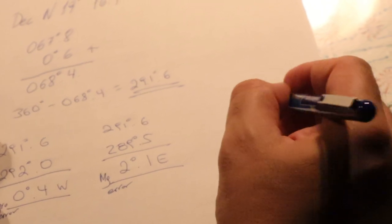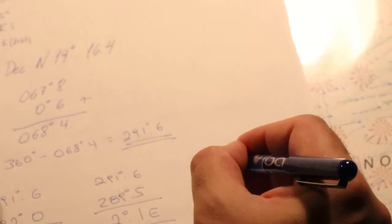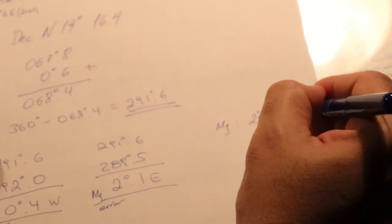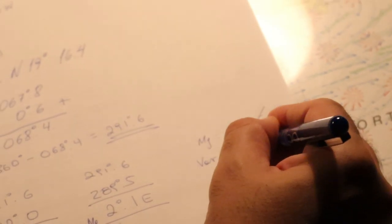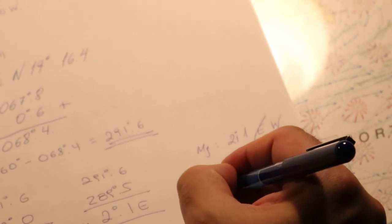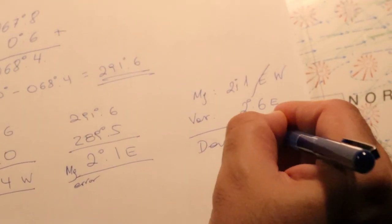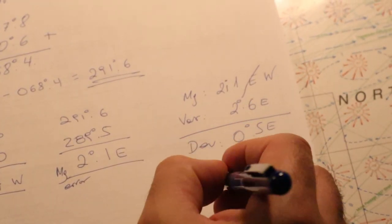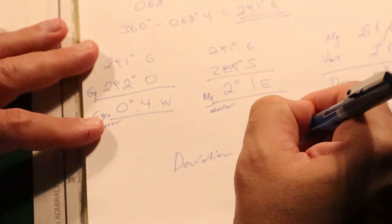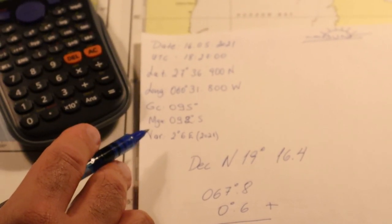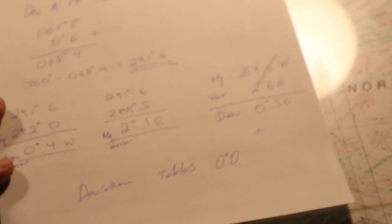The last thing to do is check the deviation table. We take the magnetic error of 2.1 east, apply it as west, and add the variation of 2.6 east below. The deviation works out to 0.5 east. It is acceptable. Our actual deviation table states that at a magnetic course of 090 degrees we will have 0 degrees deviation. This is accepted — there is some tolerance and it is close, so we are right with this observation.